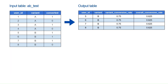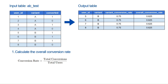Let's see how the output is derived from the input table. To calculate the overall conversion rate, the formula is total conversions divided by total number of users. From the input table, there are 8 users in total and 5 conversions made by users 1, 3, 5, 6, and 7. So the overall conversion rate is 5 divided by 8, which equals 0.625.